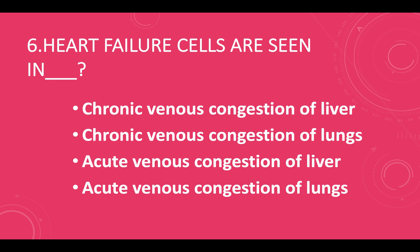Heart failure cells are seen in: option A — chronic venous congestion of liver, option B — chronic venous congestion of lungs, option C — acute venous congestion of liver, option D — acute venous congestion of lungs. Answer: option B, chronic venous congestion of lungs.